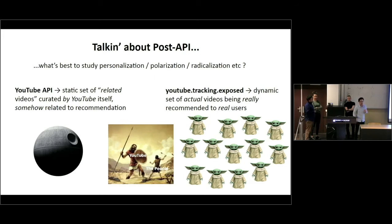What a lot of people, including myself, have been doing in the past was relying on YouTube API, which is a static set of related videos curated by YouTube itself that somehow has to do with how actual recommendations are created. While with YouTube Tracking Exposed, it's possible to get the actual list of recommended videos. Every time a video is played, the tool records a list and aggregates different sets of recommendations. We actually believe that's slightly better to do if you want to study issues that have to do with personalization, like polarization.